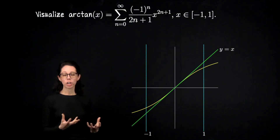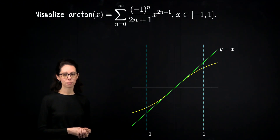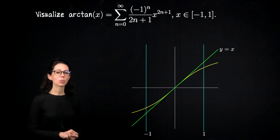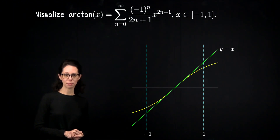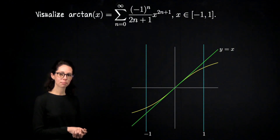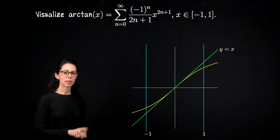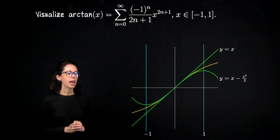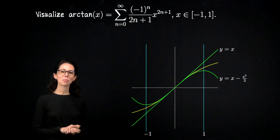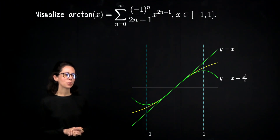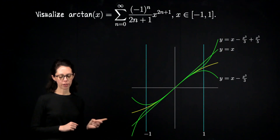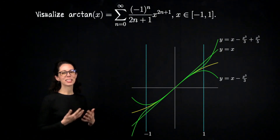Let's plot the first term in our power series expansion, when n equals 0. That gives us just the straight line y equals x, which is the line tangent to y equals arctan of x at the origin. Now let's add the n equals 1 term, giving the cubic polynomial x minus x cubed over 3 — you can see it looks a little better. Adding the next term gives x minus x cubed over 3 plus x to the fifth over 5, and the convergence gets better and better.